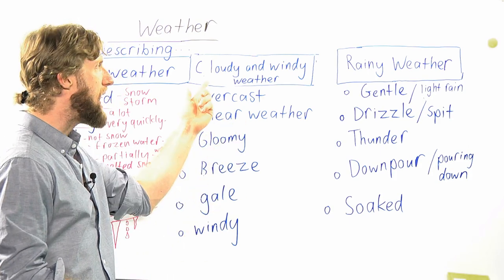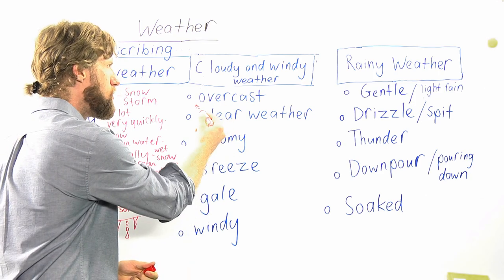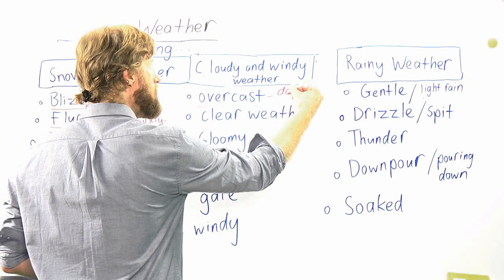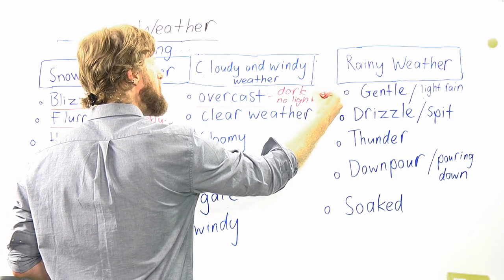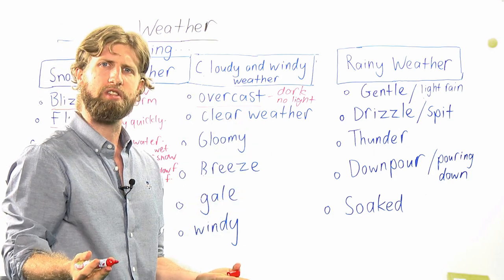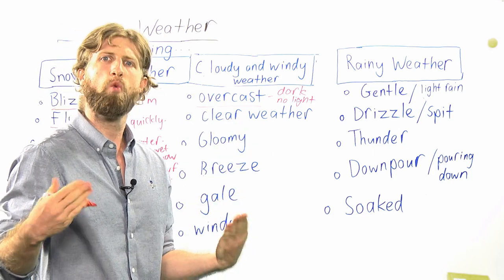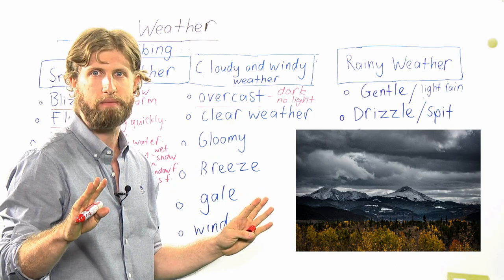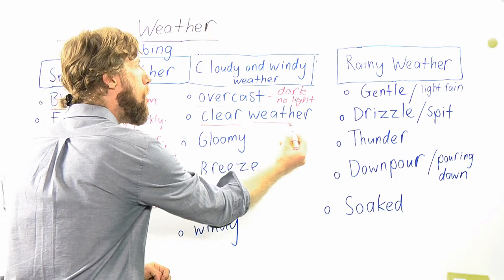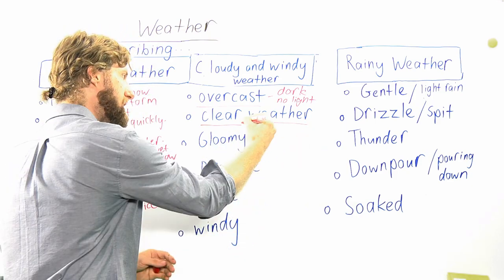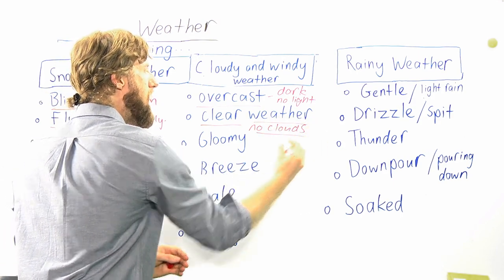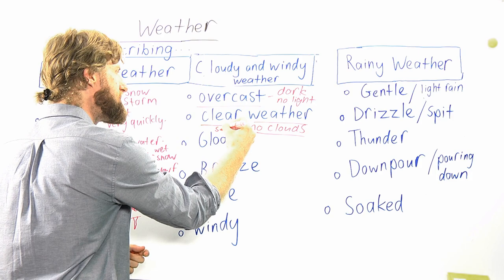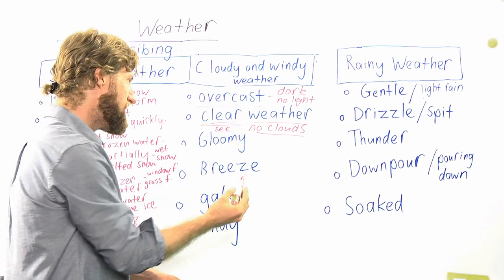Now we'll look at vocabulary for cloudy and windy weather. Overcast means the sky is very dark with no light — usually from thick clouds. For example, 'Sometimes it can be very overcast and you can't see the sky.' Next, clear weather means there are no clouds and the sky is very blue — it means very good visibility.